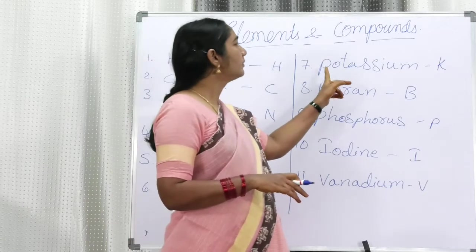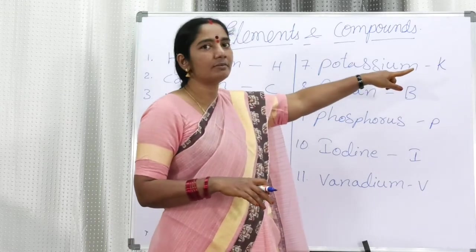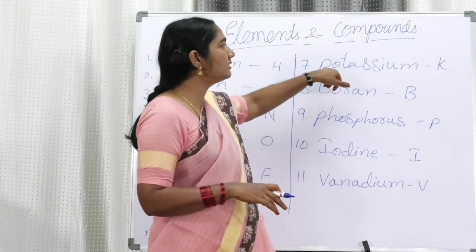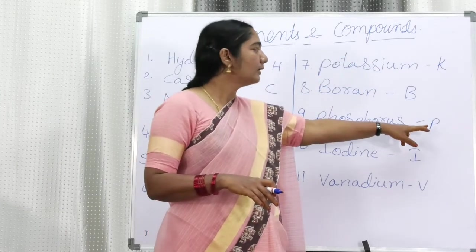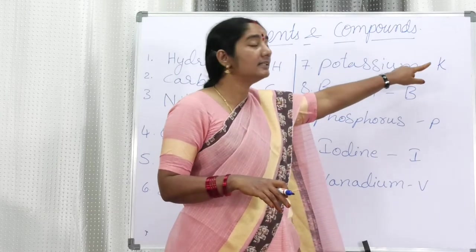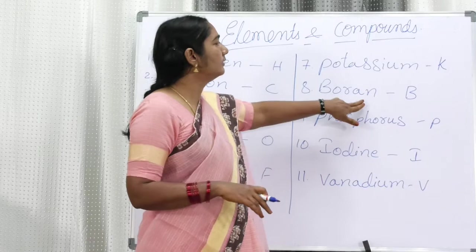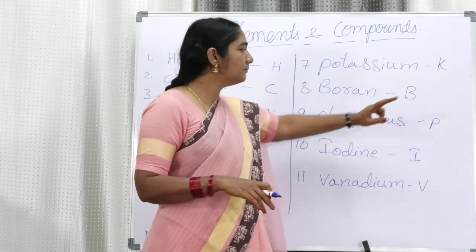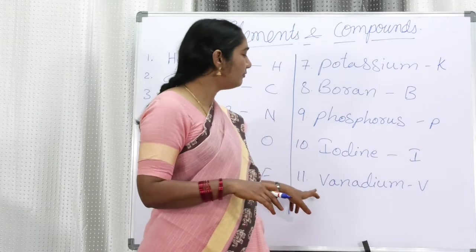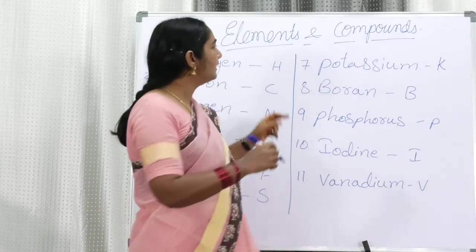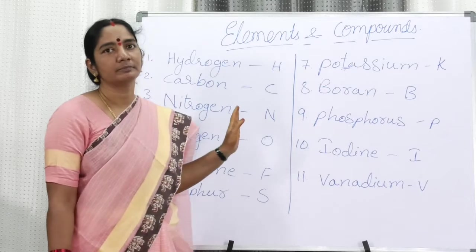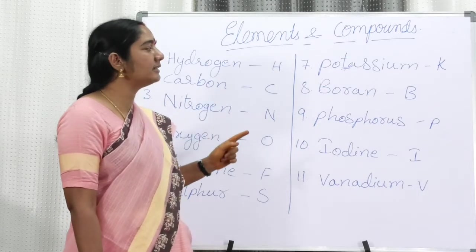Please don't get confused — P is not the first alphabet of potassium. The symbol of potassium is K. K is the symbol of potassium — very important. Please remember: P is for phosphorus, because phosphorus begins with P. So potassium's symbol is K, not P. Don't get confused. Boron — the symbol is B, the first alphabet. Iodine — the symbol is I. Vanadium — the symbol is V. Except for potassium, all the rest have their symbol as the first alphabet of their name, and all symbols are written in capitals.